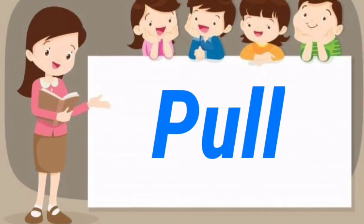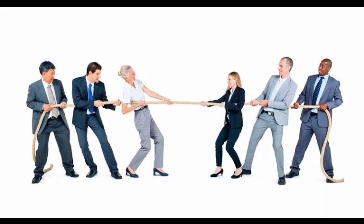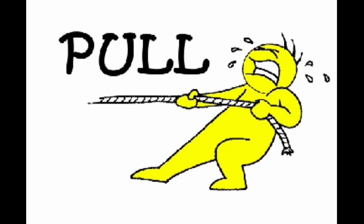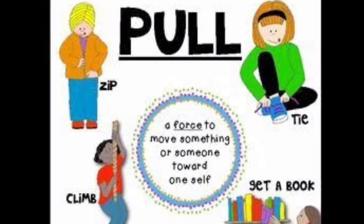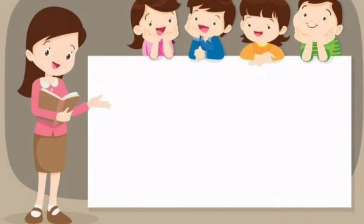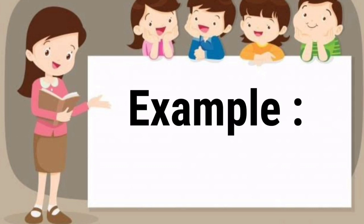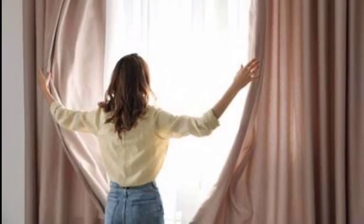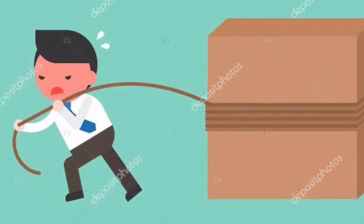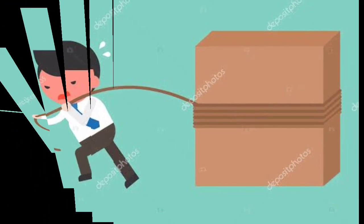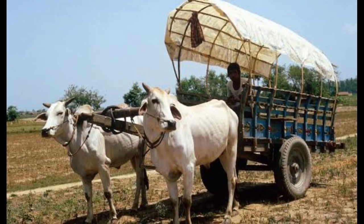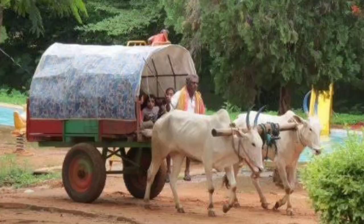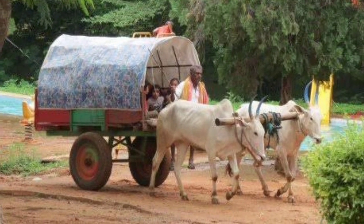Next, pull. When a force is applied in the direction opposite to the direction of an object, that is called pull. For example: opening the door, pulling the curtain, dragging the box. In a bullock cart, a cart is being pulled by a bullock.